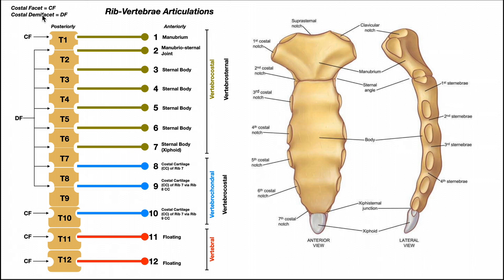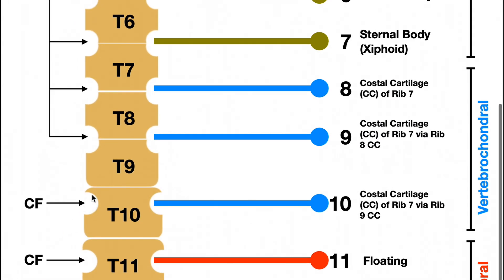To understand that, we need to know the difference between a costal facet (CF) and a demi-facet or costal demi-facet (DF). A facet is a site for the articulation of a rib that lies entirely on one vertebra. For example, at T10, this space for rib articulation lies completely on one vertebral body — that's a costal facet, sometimes called a complete costal facet.